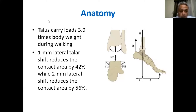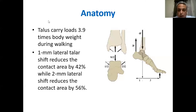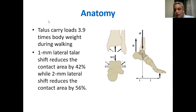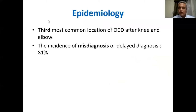If you have a two-millimeter lateral shift, it reduces the contact area by more than half — nearly 56% — which means the ankle is not very forgiving. If you do not have a perfect reduction and perfect positioning of the talus, if it is moving just one or two millimeters away from its proper position, this would cause major changes in the contact areas and lead to the development of osteoarthritis.